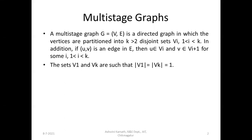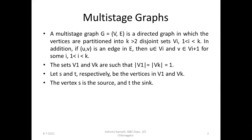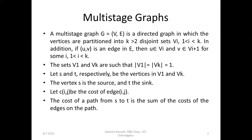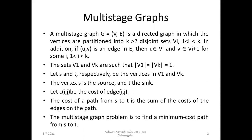The sets V1 and Vk each contain exactly one vertex — the source s and sink t respectively. The aim of the multi-stage graph problem is to find the shortest (minimum cost) path from the source node s to the sink node t. The cost of a path is the sum of costs of all edges along that path.